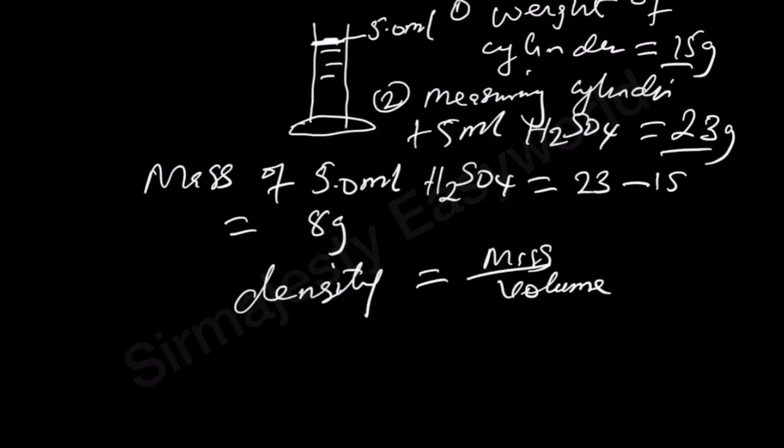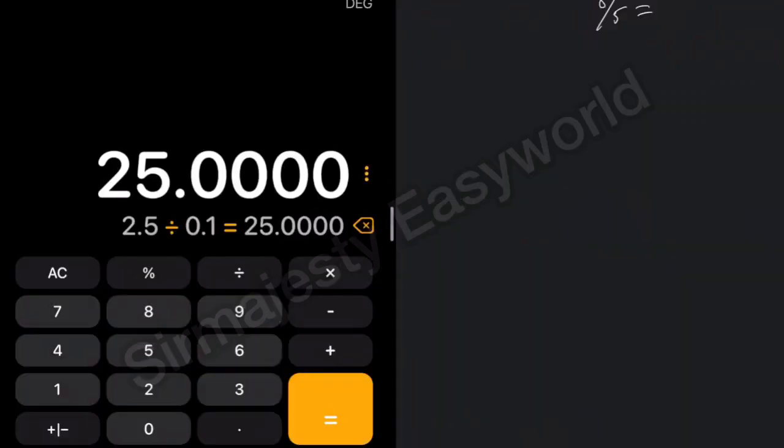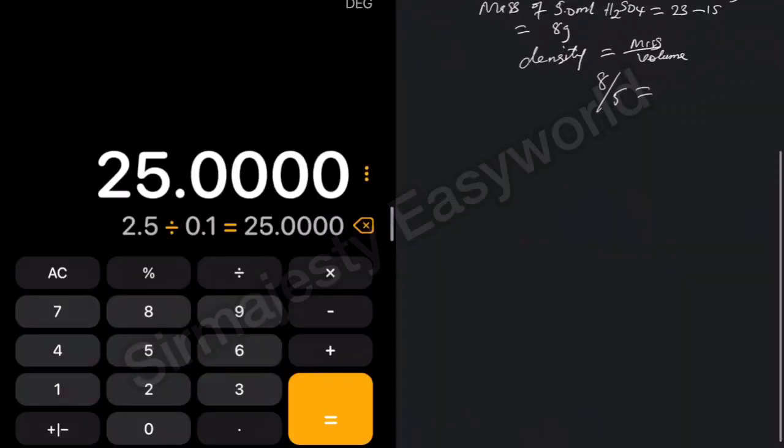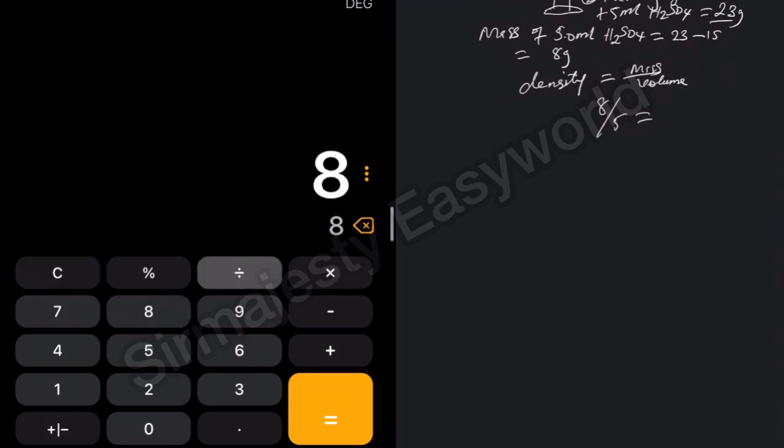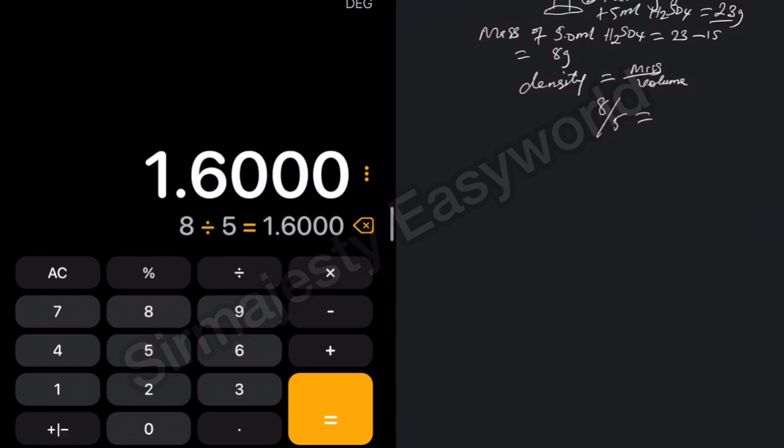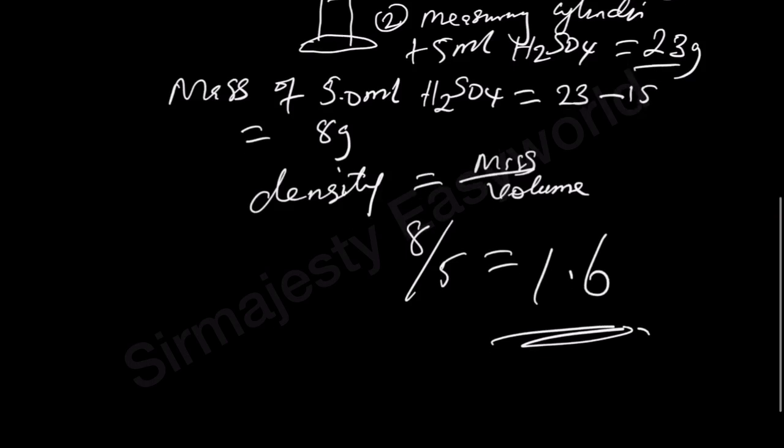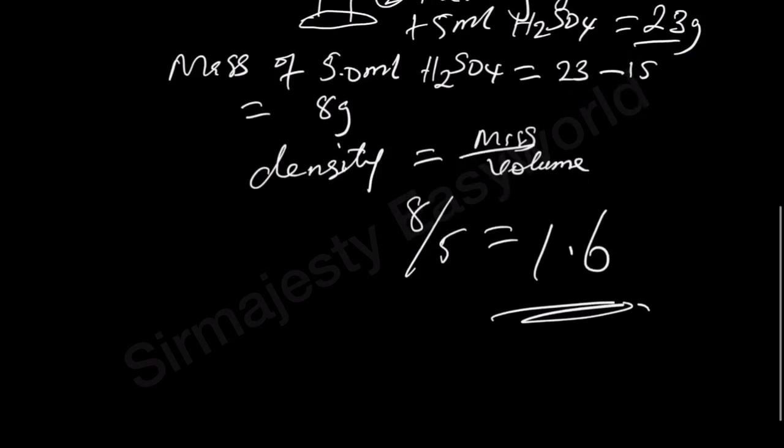Density is equal to mass over volume. Now the mass is 8 grams, then the volume is 5. So for you to know the density, assuming these are the figures you get, you just say 8 over 5. You now see what it will give you. So from the calculator aspect, what do we have? 8 over 5 is 1.6, let's assume. It is 1.6, so it is not up to 1.84.